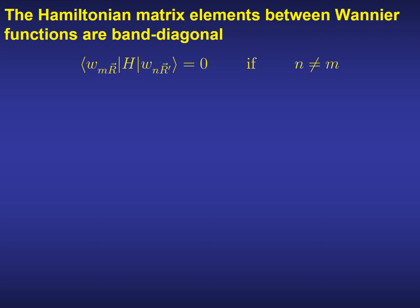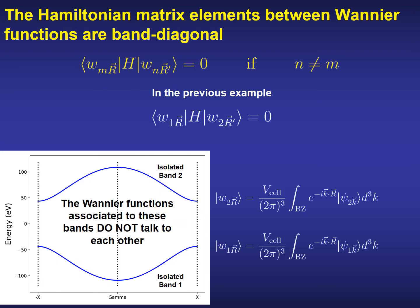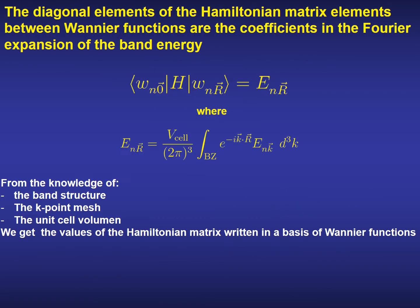The last two properties are related to the expression of the Hamiltonian in a basis of Wannier functions. The first one tells us that the Hamiltonian matrix elements expressed in a basis of Wannier functions are band diagonal — in other words, the Wannier functions associated with different bands do not interact via the Hamiltonian. If the Hamiltonian is band diagonal, the diagonal elements are the coefficients in the Fourier expansion of the band energy, as shown in the first slide of this presentation. So from knowledge of the band structure, the k-point mesh, and the unit cell volume, we can obtain the values of the Hamiltonian matrix elements written in a basis of Wannier functions.